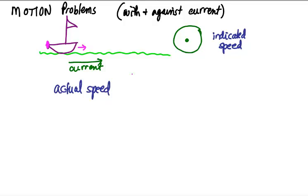As an example, suppose the current is three miles per hour and the speed gauge shows zero. A person standing on the shore would say the boat is going three miles per hour. So the indicated speed is zero, but the river is moving at three, so the actual speed is three miles per hour.